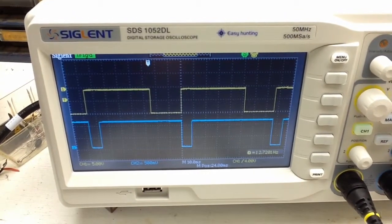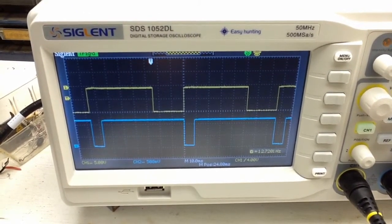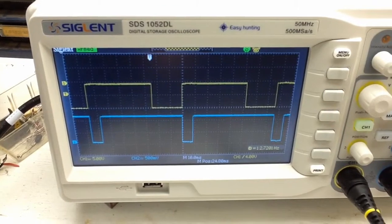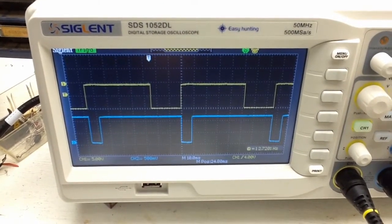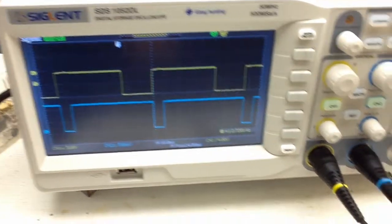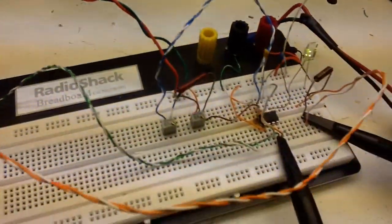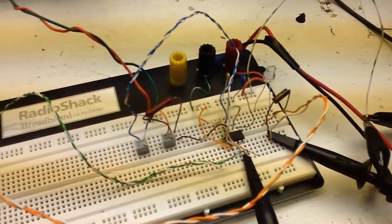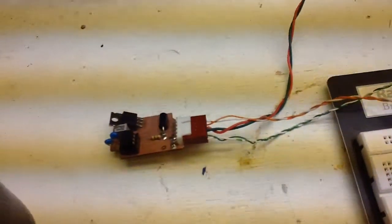And so what you see with the yellow trace is the period where the signal is high is when it's actually driving the output. Now in this case, I'm just using it to drive an LED. So it's not very interesting.